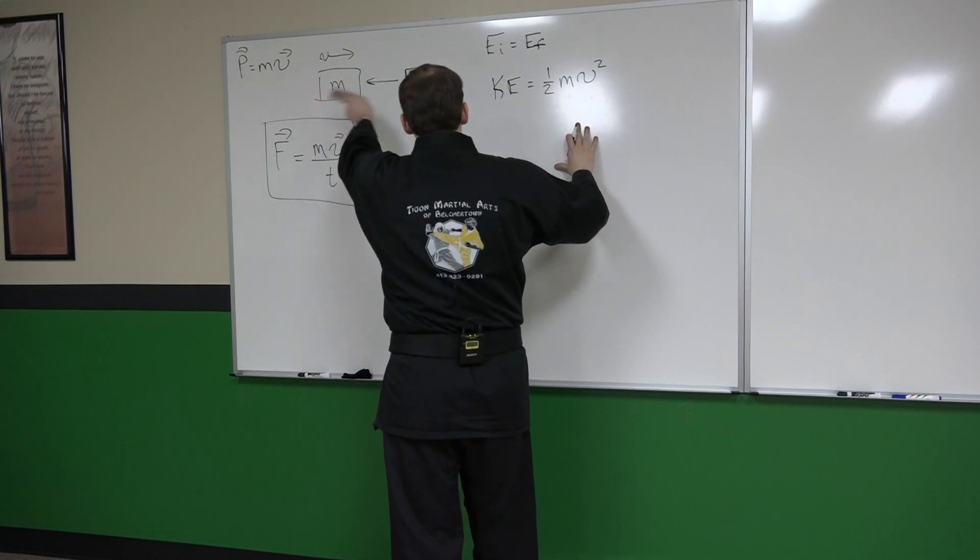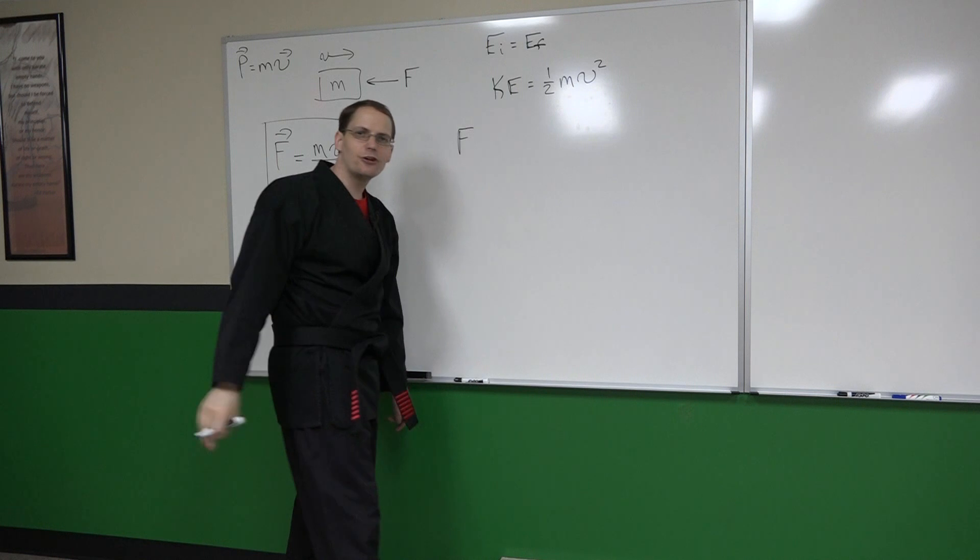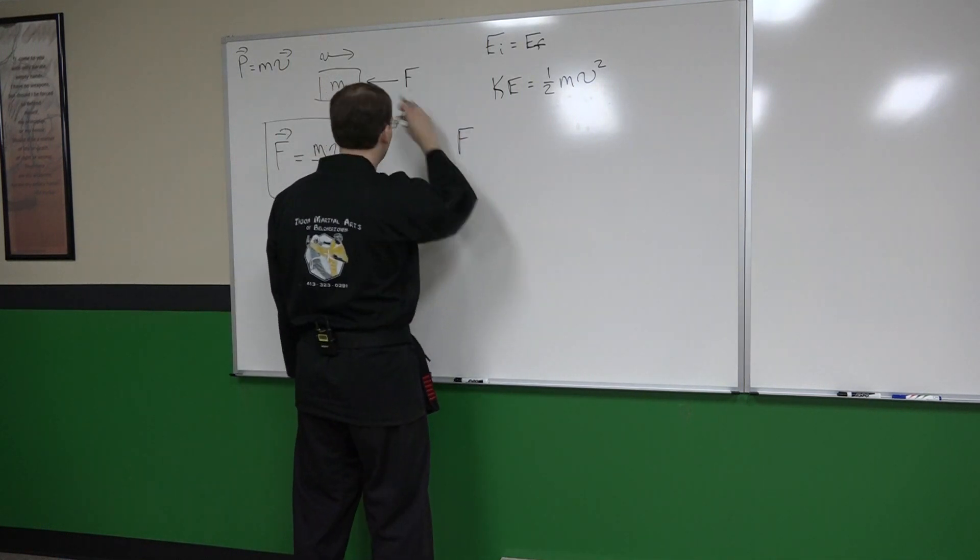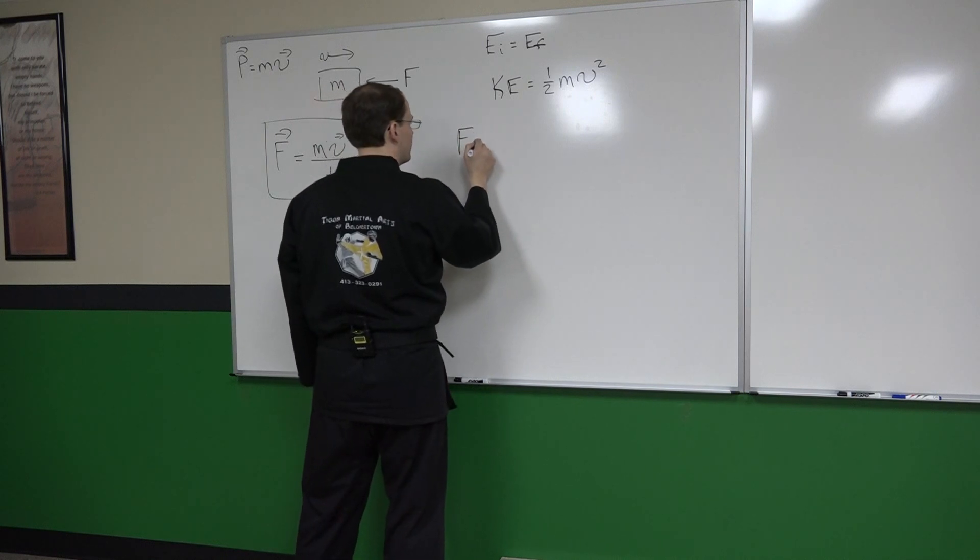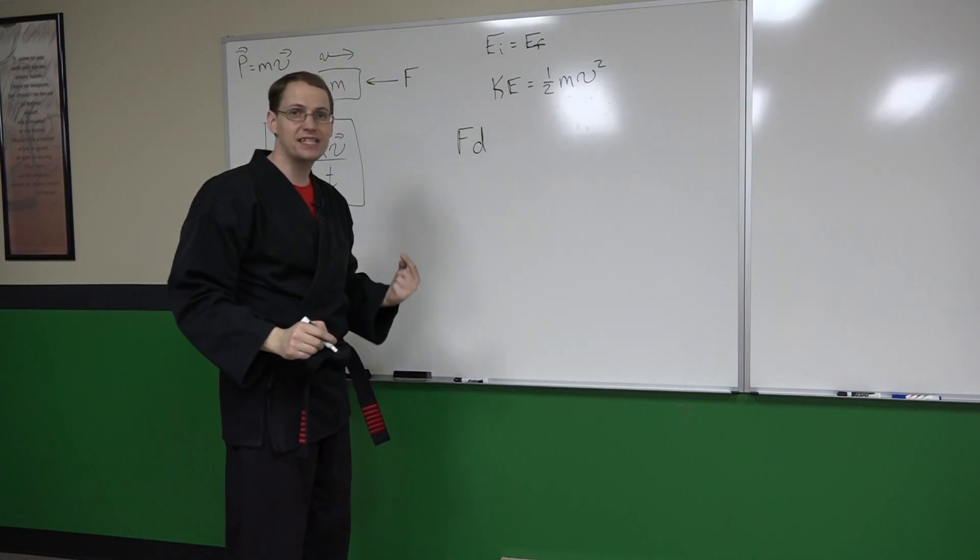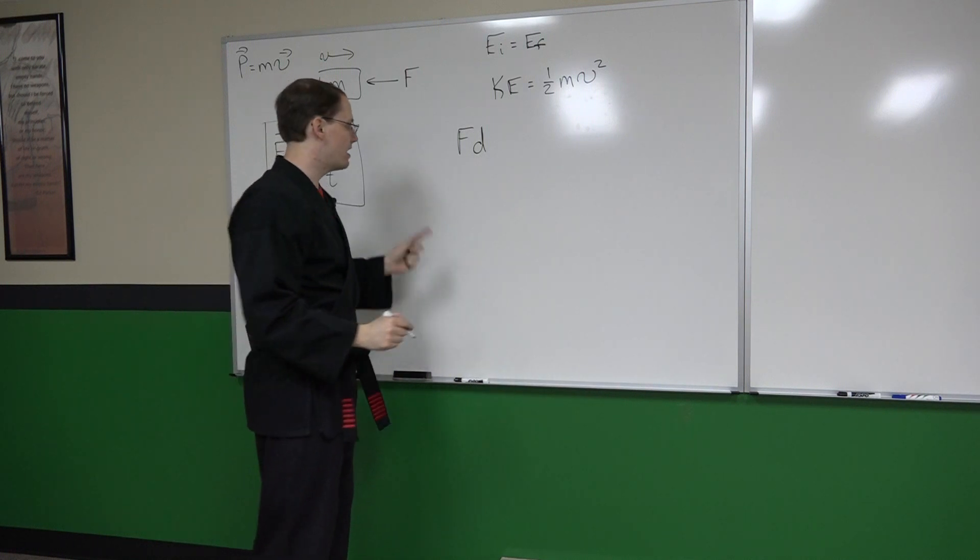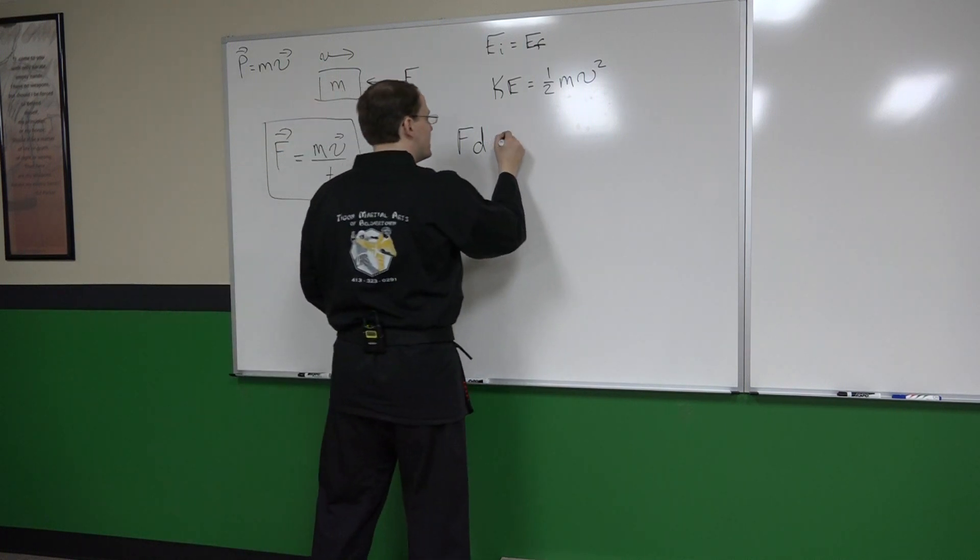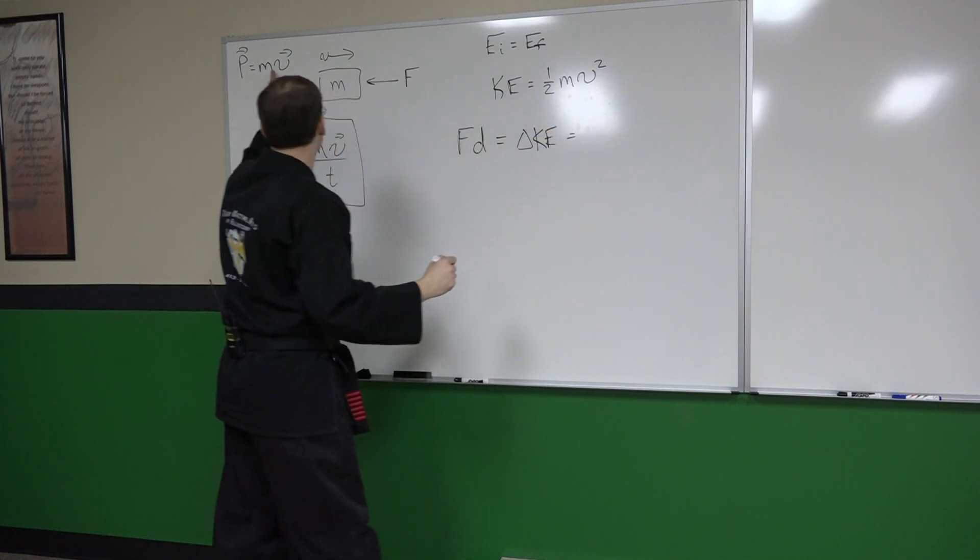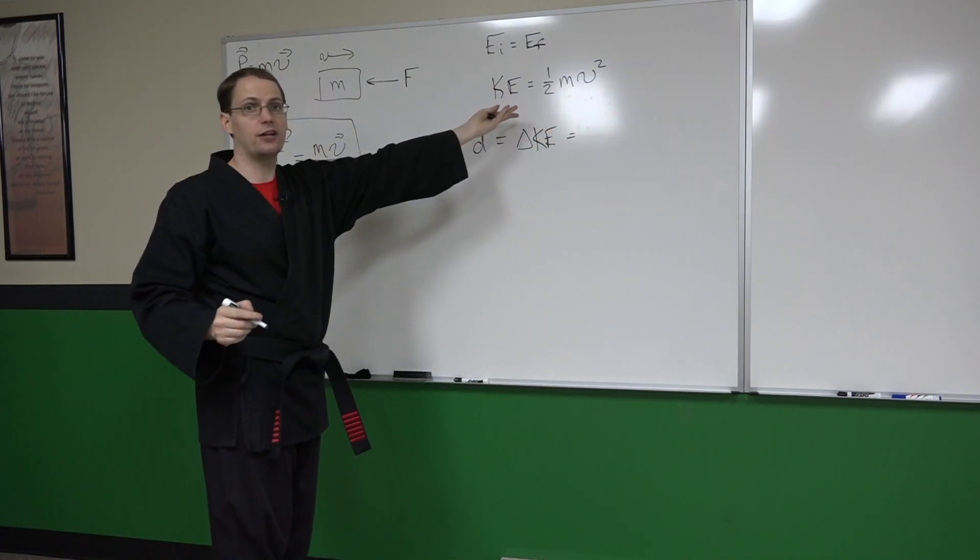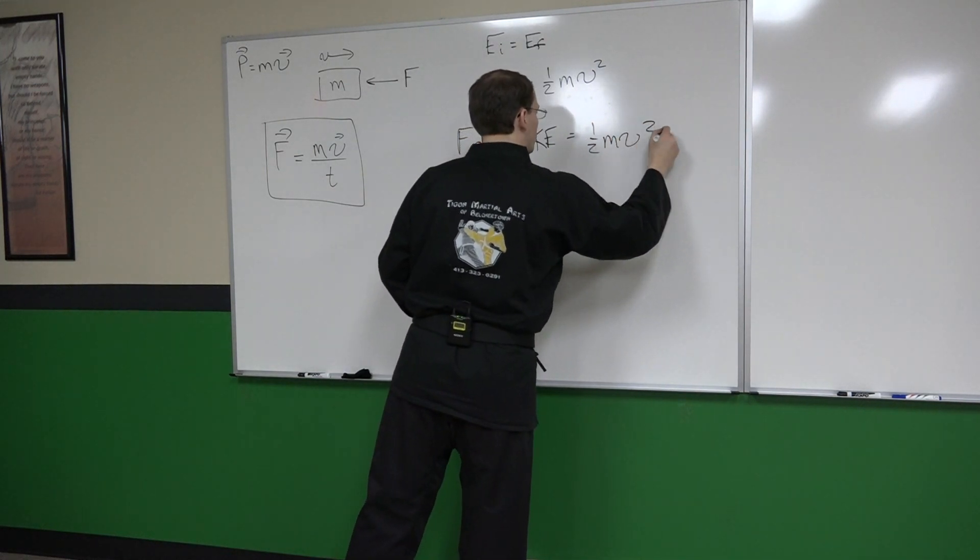So again we have the same situation. Now in terms of the kinetic energy, we have an expression that would be written that the force times the distance over which that force is acting, so now it's not time it's distance, is equal to the change in kinetic energy, which again same thing we got here. The final kinetic energy is zero, so the change in kinetic energy is one-half mv squared.